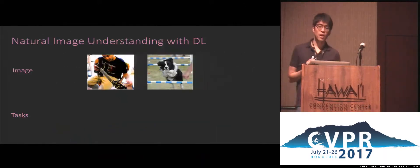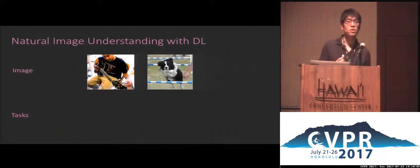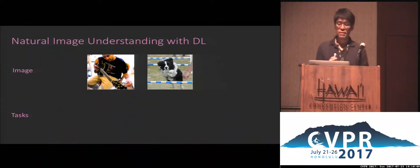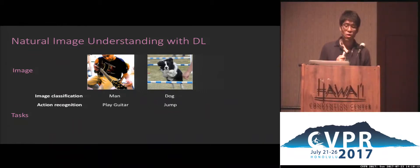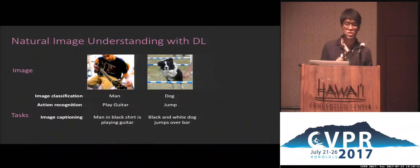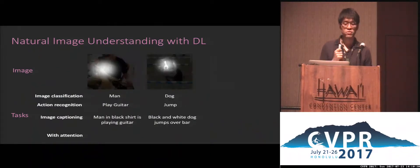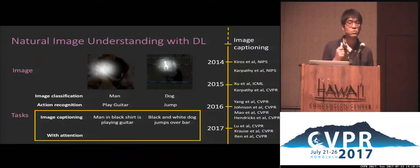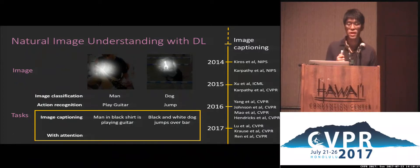In the past few years, computer vision experts explored using deep learning to better understand the nature of images. For example, we solved the task of image classification to recognize objects, or action recognition to understand their behaviors. Furthermore, we are interested in general image captioning to describe the content of images, with visual attention to show the focus of the network.